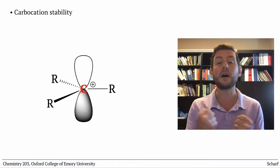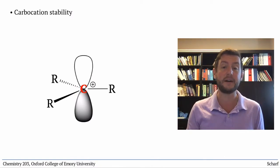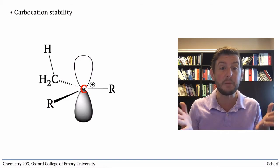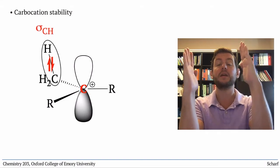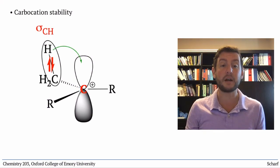They are hungry for electrons and are stabilized by anything that can provide them. Typically, alkyl carbocations are stabilized by any adjacent sigma bonds that happen to align with the empty P orbital. This is called hyperconjugation.